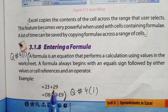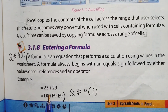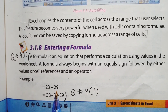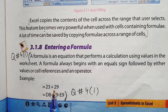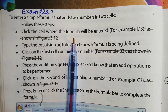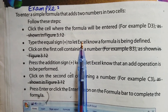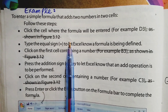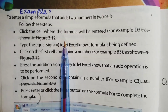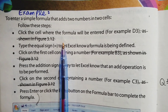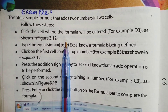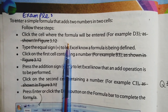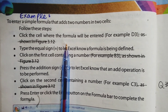Now we will discuss how a formula is entered with an example. On page number 54, an example is given of how a formula is entered in the Excel worksheet. We will properly discuss this example of entering a formula in an Excel worksheet. This example is related to the addition of two numbers — how to enter a formula in Excel to add two numbers.